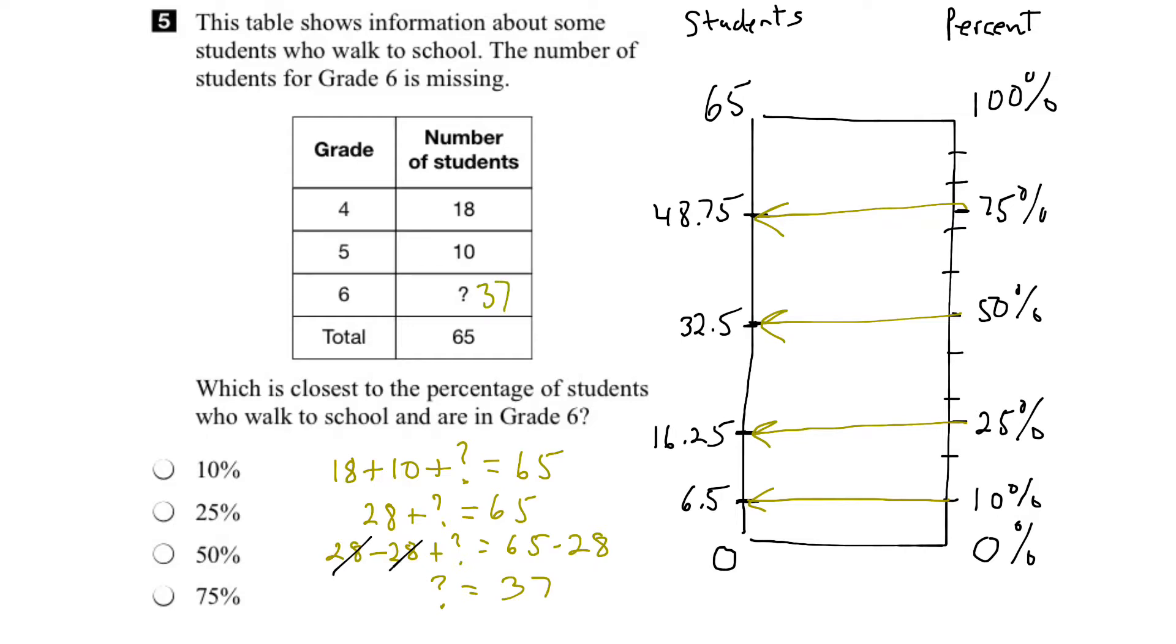So what we have to do is figure out where does 37 fit on this line here. I'm going to write 37 in green here, just for something different. So when we look at this line, 37 would be bigger than 32 and a half, but a lot less than 48.75. So it's probably somewhere around there. About here. So let's draw that in. 37 is probably somewhere around there.